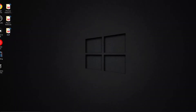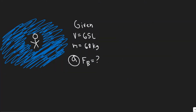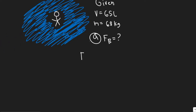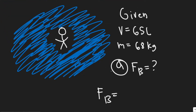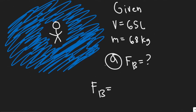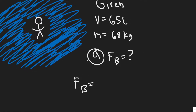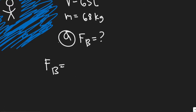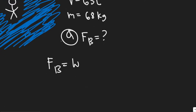The first thing you need to know is the formula for the buoyant force. The buoyant force in basically any case is equal to the weight of the displaced water. So if you have a person submerged in water, the buoyant force acting on them is equal to the weight of the water that's going to be displaced. So the weight of the water displaced equals the buoyant force.